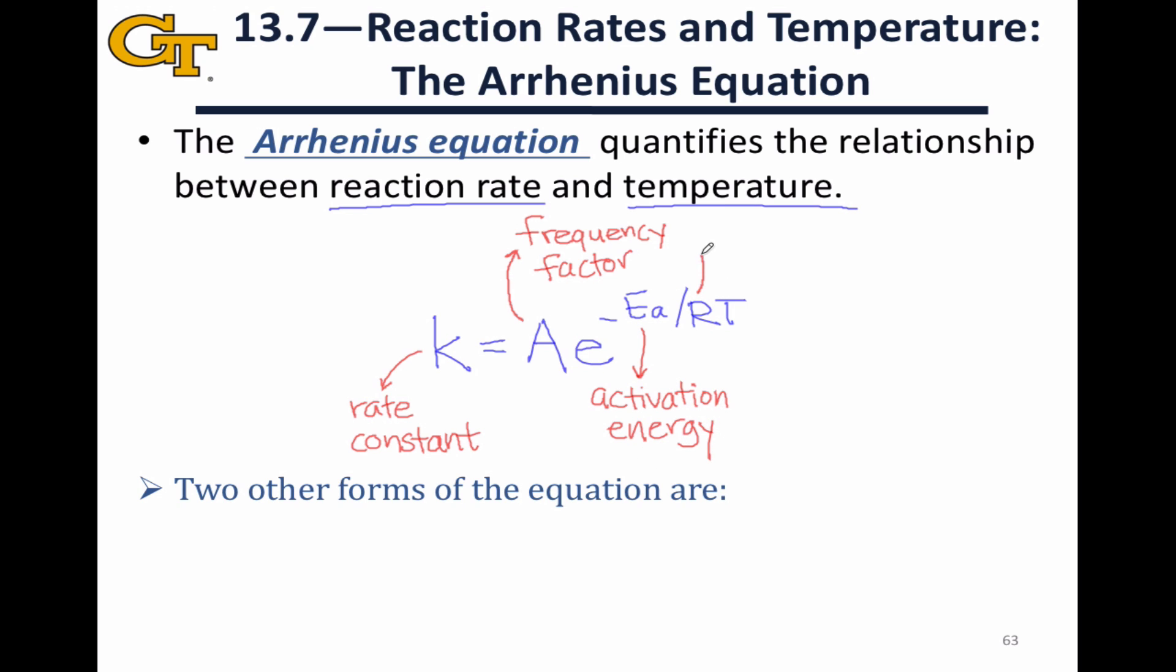R is the ideal gas constant, and since activation energies are usually expressed in joules or kilojoules per mole, R is typically 8.314 joules per kelvin mole, although any form of R that works out to units of energy divided by temperature per mole would be fine, as long as those units are compatible with the activation energy. T is the temperature, and it's important to express the temperature here in kelvin.